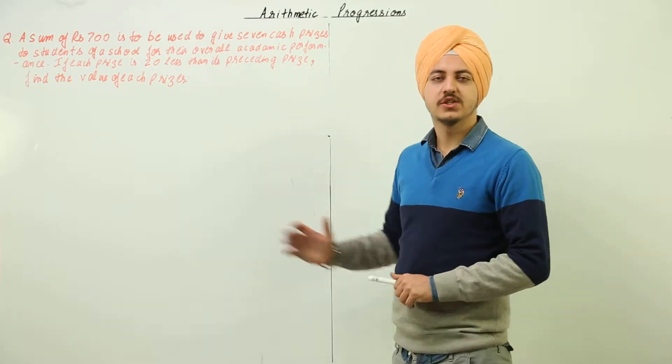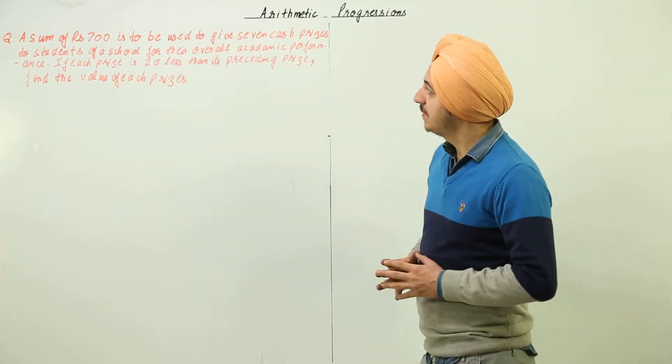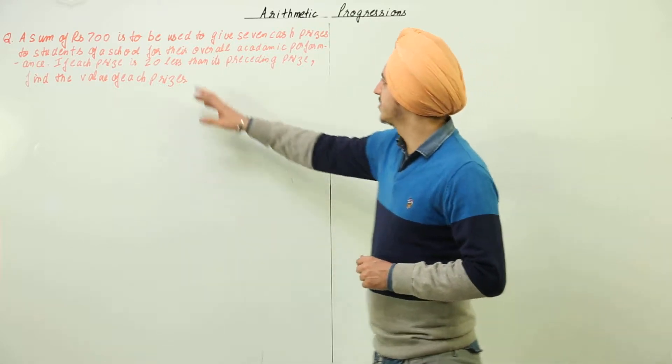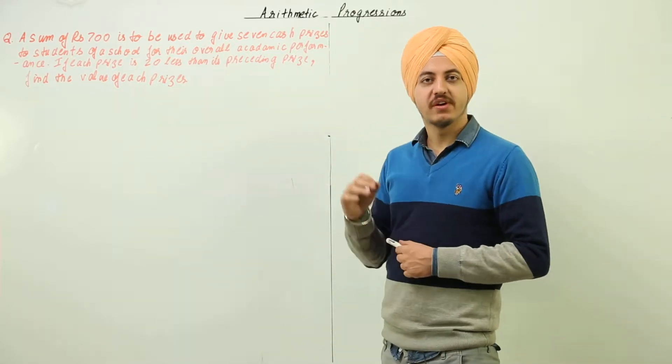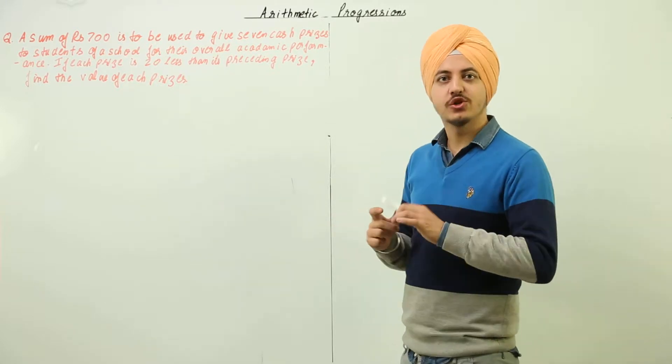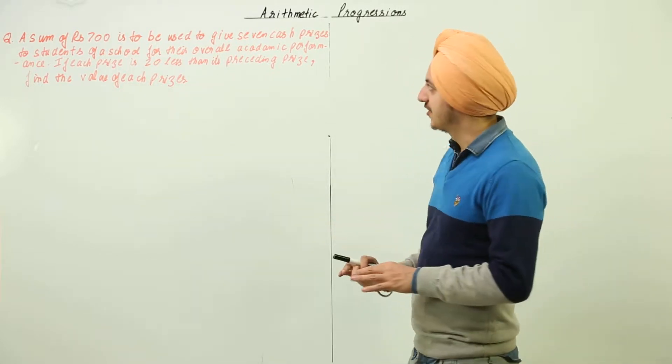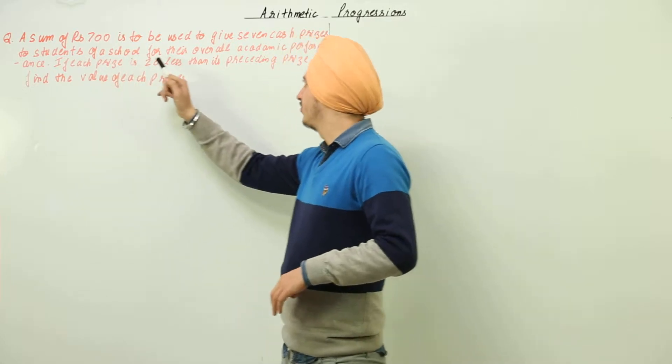Now the next question says a sum of Rs. 700 is to be used to give 7 cash prizes. So the number of cash prizes are 7 and the total amount is 700 to students of a school for their overall academic performance.